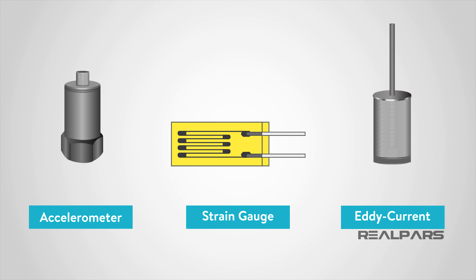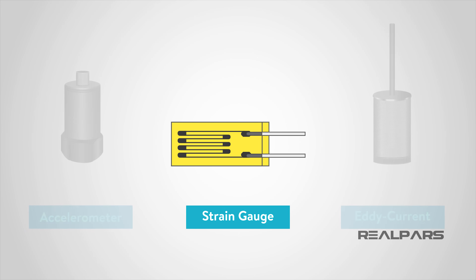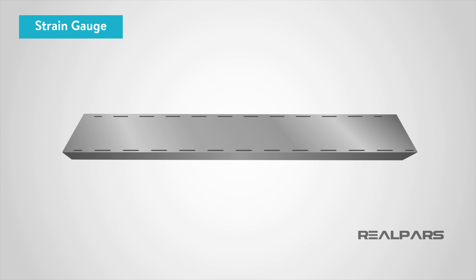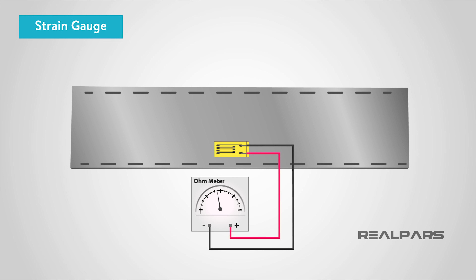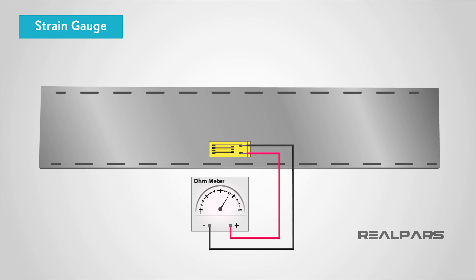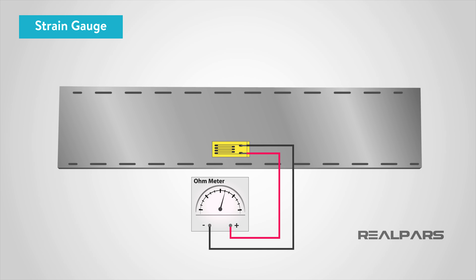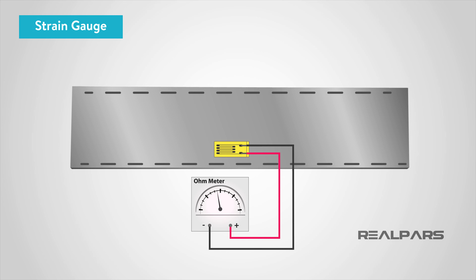Now let's talk about a strain gauge type of vibration sensor. Just like it sounds, a strain gauge measures the strain on a machine component. A strain gauge is a sensor whose resistance varies with applied force. It converts force, pressure, tension, weight, etc., into a change in electrical resistance, which can then be measured.